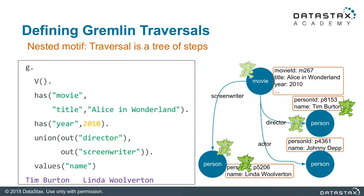Traversal steps are not just a sequence anymore — they form a tree with branches. More specifically, this union step in this example has two nested traversals with one 'out' step each. As you can see in the illustration, we are still looking for the 2010 Alice in Wonderland movie, but then we want to traverse outgoing edges with labels 'director' and 'screenwriter' and take a union of all vertices that we find. Finally, we are interested in the names of all directors and screenwriters of the 2010 Alice in Wonderland movie. The result is Tim Burton, as expected, who is the director, and Linda Wolverton, who is the screenwriter.